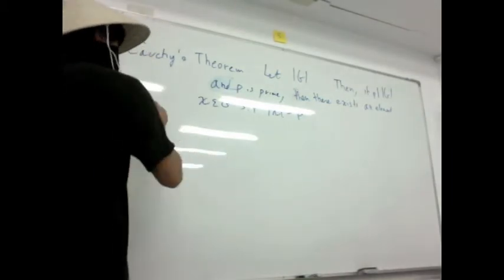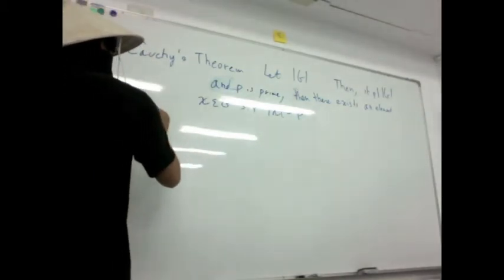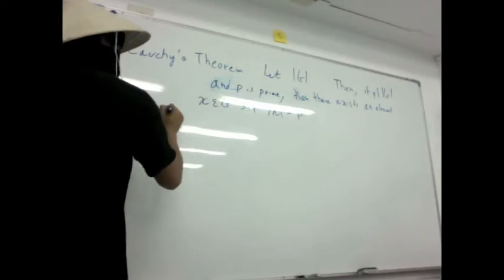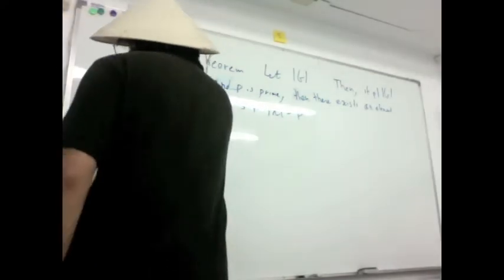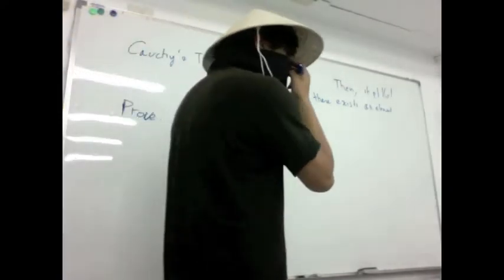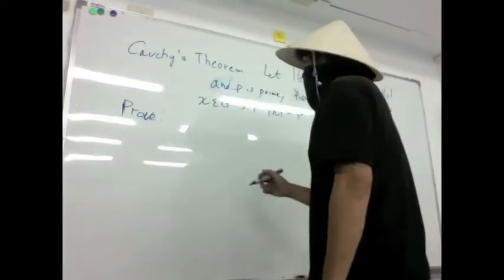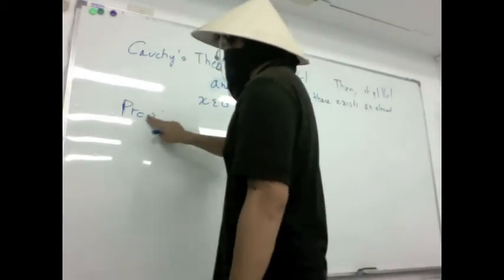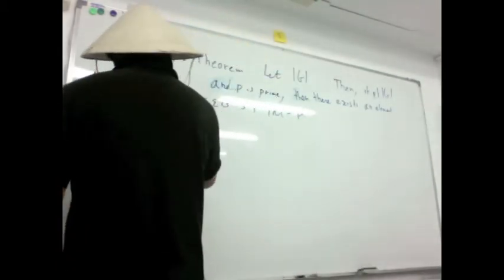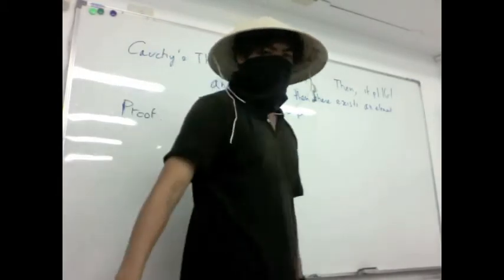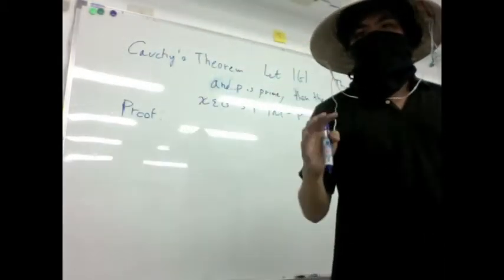So this is not an easy theorem to prove. Why? Because the machinery involves orbits, stabilizers, and group actions. We're not going to go into that until chapter 17. But for now the proof itself — while not the most critical thing — we'll work through it.